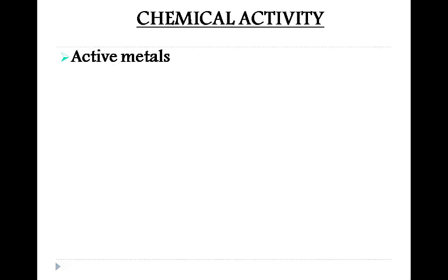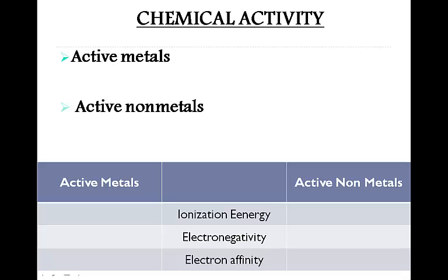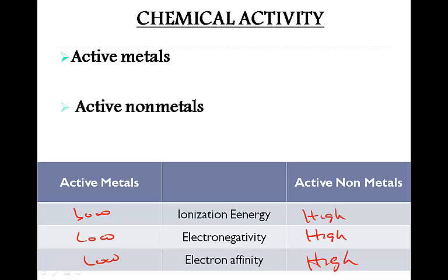For chemical activity: active metals react by forming cations. The most active metals are those that can easily lose an electron — our alkali metals, with one valence electron. Active non-metals react by forming anions. The most active non-metals are the halogens, which only need to gain one electron. Active metals have low ionization energy, low electronegativity, and low electron affinity. Active non-metals have high electron affinity, high electronegativity, and high ionization energy.